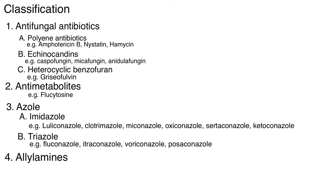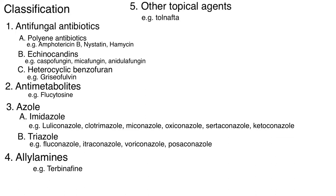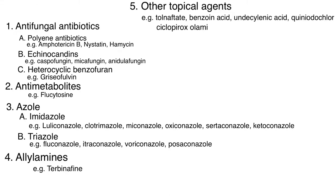Number four is allylamines — example is terbinafine. Number five is other topical agents — examples are tolnaftate, benzoic acid, undecylenic acid, quinidochlor, ciclopirox olamine, butenafine, and sodium thiosulfate. That completes the classification.